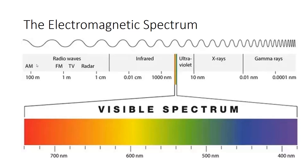Picking up where we left off last time, I ended the last lecture by talking about this electromagnetic spectrum right here. The way the electromagnetic spectrum works is longer wavelengths typically have less energy, and the shorter the wavelength gets, the more energetic the radiation is. We actually have radio waves that pass through our bodies harmlessly, whereas gamma rays can cause very serious havoc.